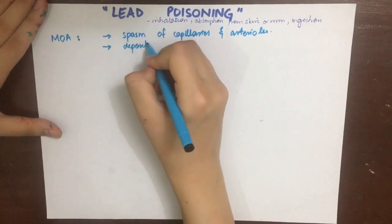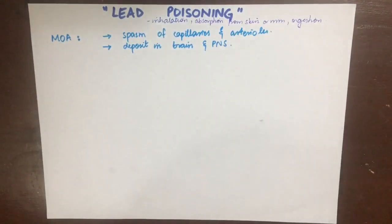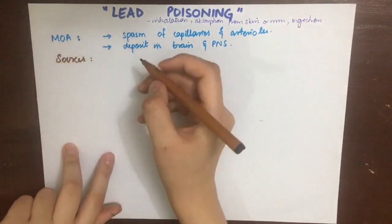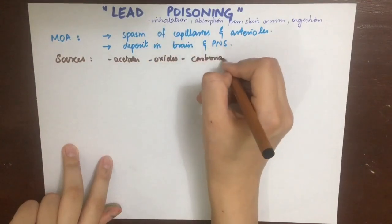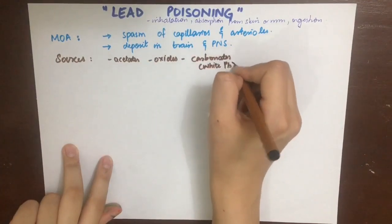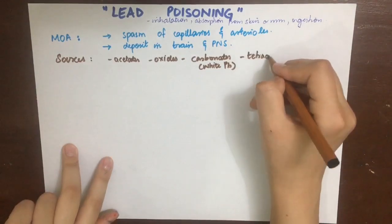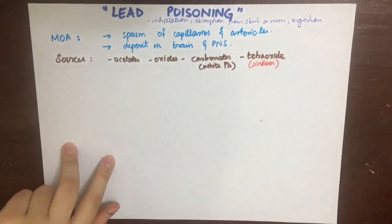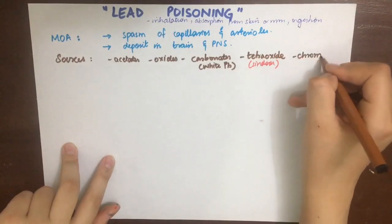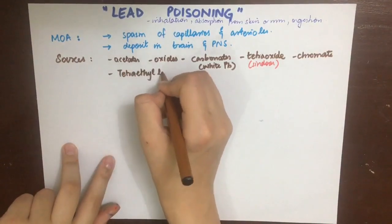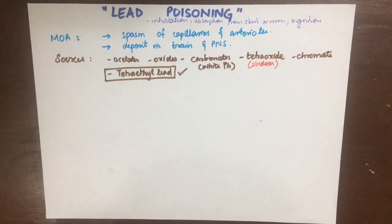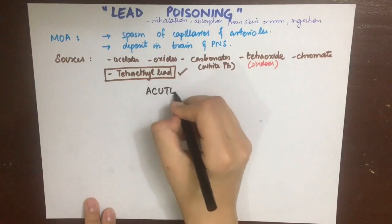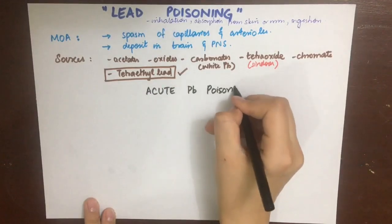There are many sources of lead such as the acetates of lead, oxides of lead, carbonates or white lead, tetra oxide or Sindhu also known as red lead, chromate of lead such as yellow chrome, and most importantly tetra ethyl lead, which is the most poisonous.